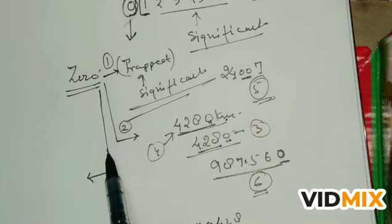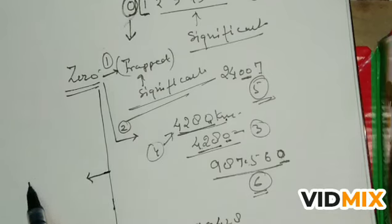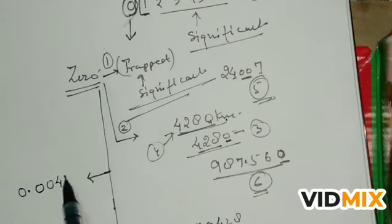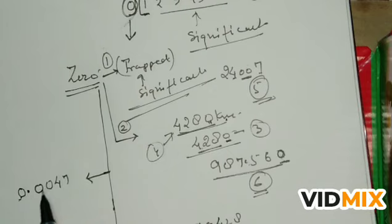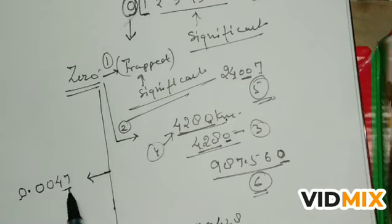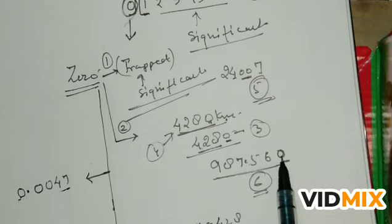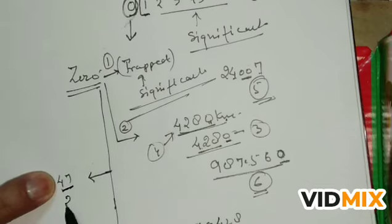The third condition: if zero is a leading zero. For example, 0.0047 — after the decimal we have two zeros, then 4 and 7. These leading zeros after the decimal are not significant. So in 0.0047, there are only 2 significant figures.